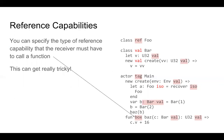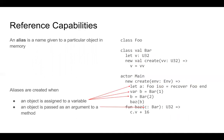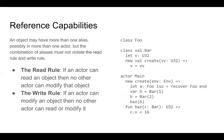Reference capabilities can get really tricky. One of the hardest things when you start using Pony is figuring out reference capability related errors, because you get thrown into it right from the get-go. An alias is a name given to a particular object in memory. Aliases are created when an object is assigned to a variable, and also when an object is passed as an argument to a method. An object can have more than one alias, possibly in more than one actor, but the combination of aliases must not violate the read rule and the write rule.